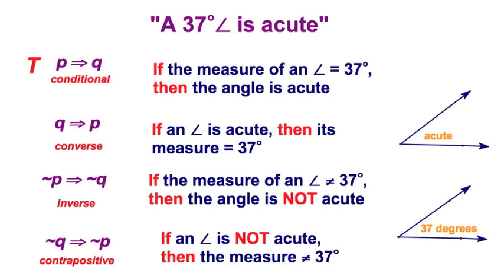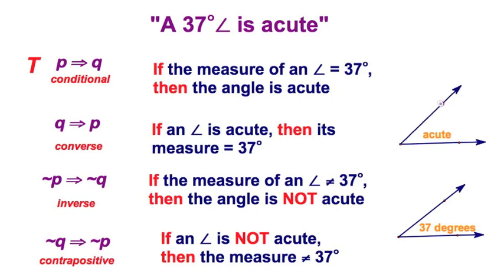I look at the converse. I reverse that statement. If an angle is acute, then its measure is 37. Well, I've got a couple angles over here. I've got a 37 degree angle here, and I've got an acute angle. Of course, an acute angle can vary. If it's acute, maybe it's going to be 87. Maybe it's going to be 17. It doesn't have to be 37. If it's not true all the time, we assign it a value of false.